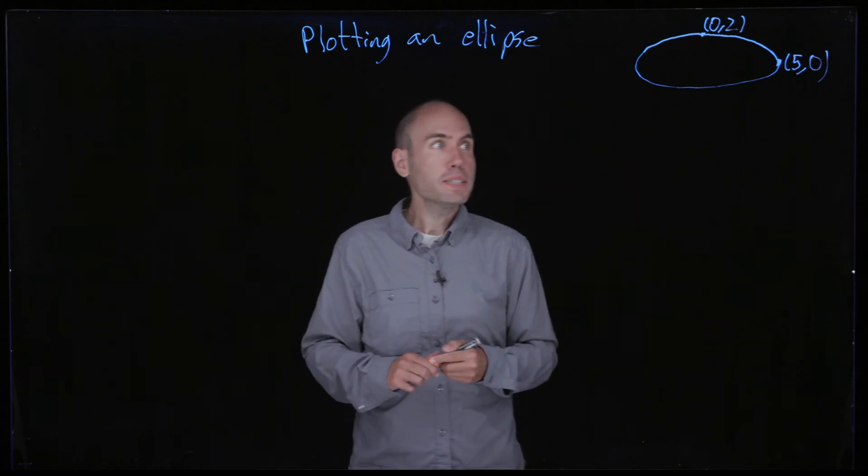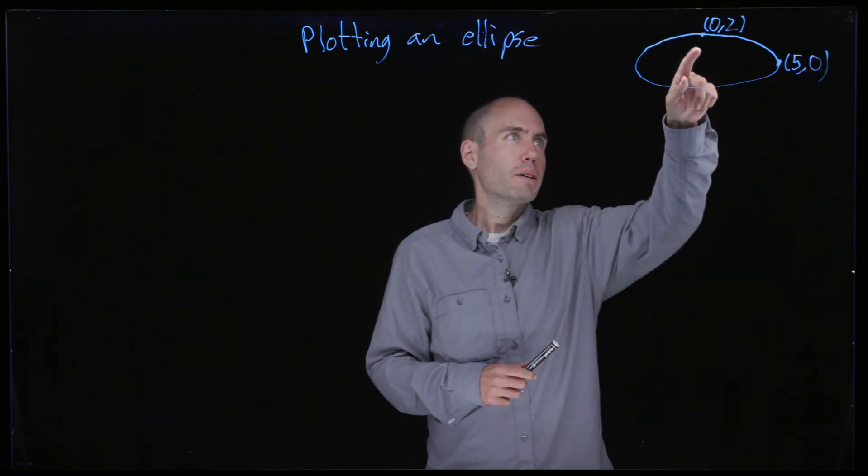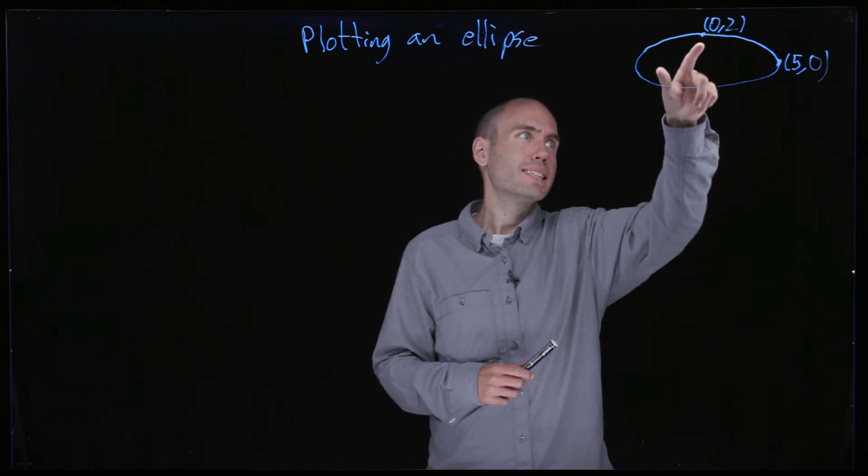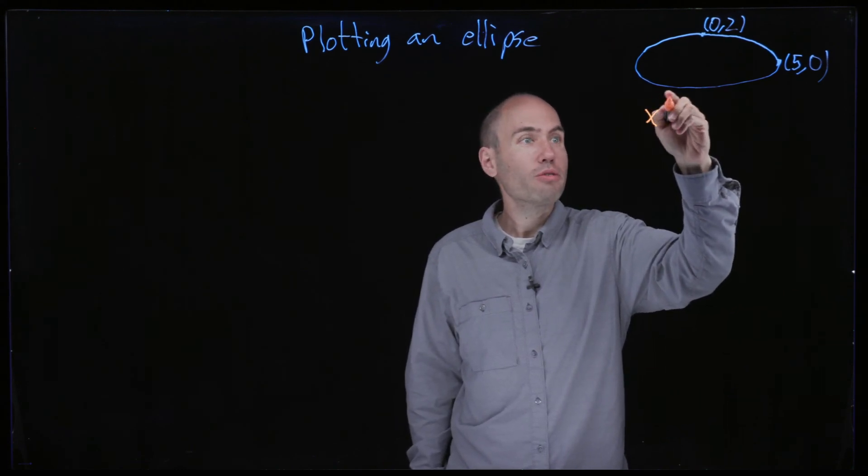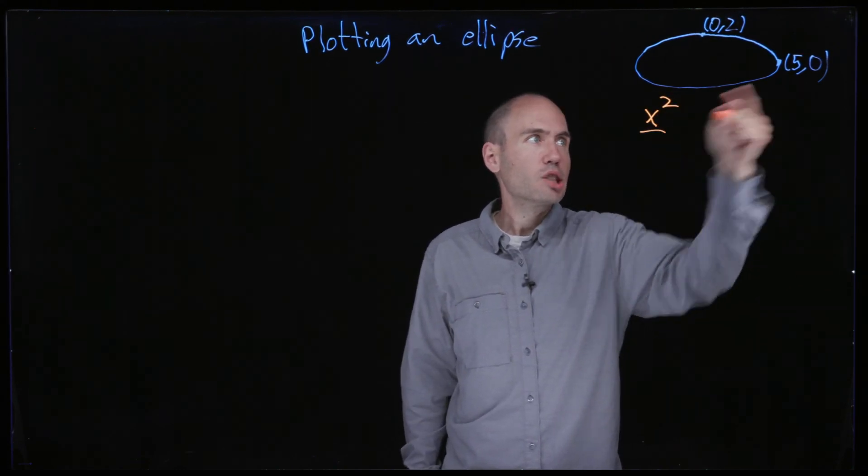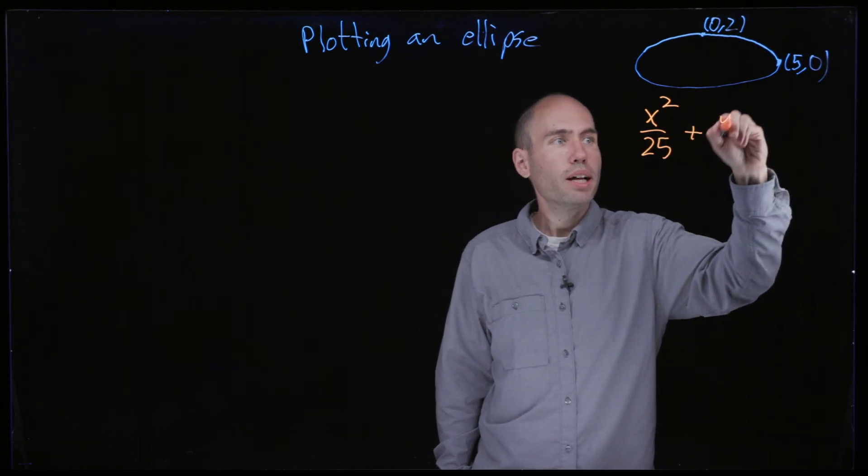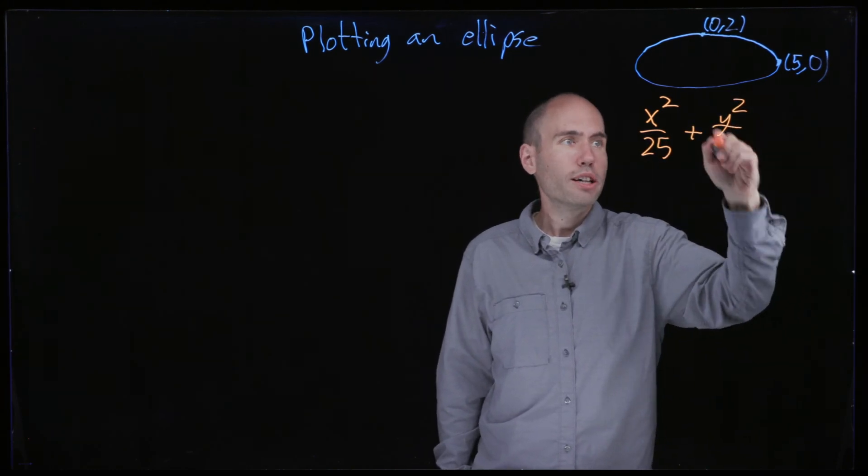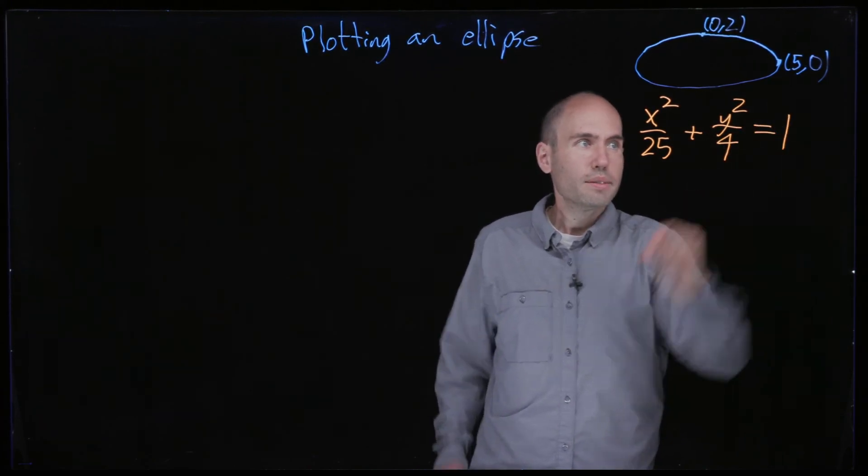Let's talk about how to plot this ellipse in MATLAB. When you see something like this with endpoints (0,2) and (5,0), at least for me what I think reflexively is x squared over 5 squared, so x squared over 25 plus y squared over 2 squared, so y squared over 4 equals 1.